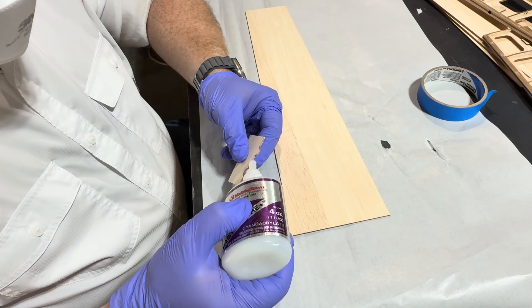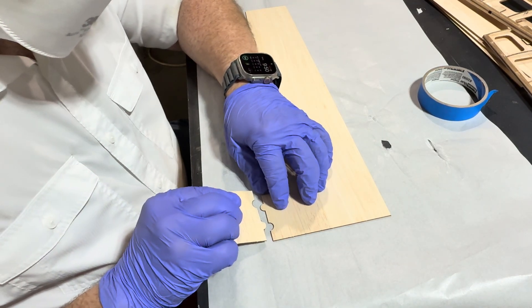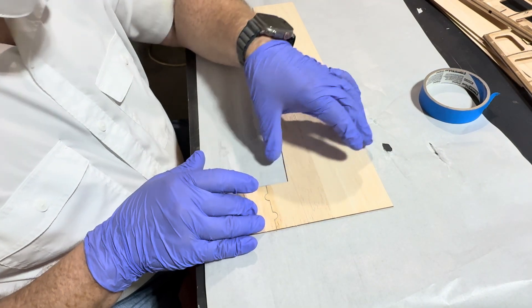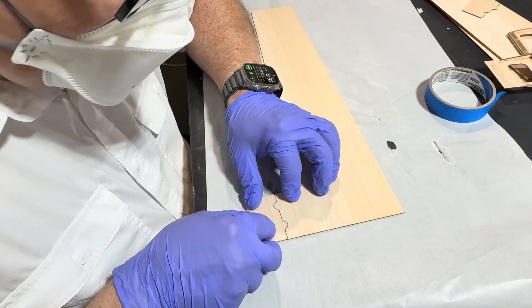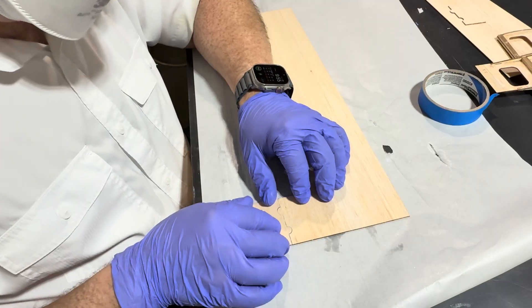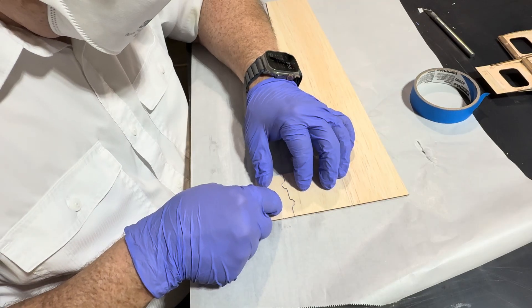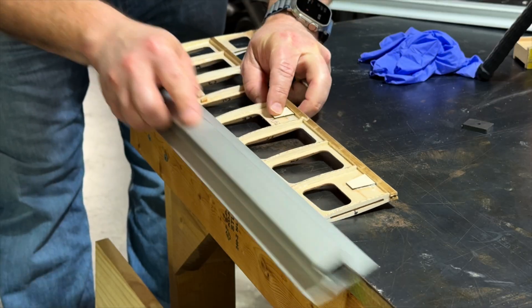One of the really great things about this kit is the fact that the skins, the balsa skins that are used to cover it, they're all laser cut. And they're laser cut to the exact shape of the horizontal stabilizer, which is just fantastic. It's a massive time saver.